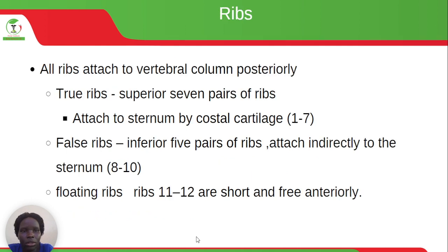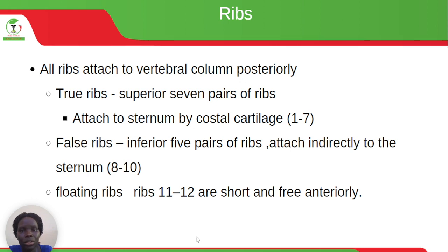All ribs attach to the vertebral column posteriorly. True ribs are the superior 7 pairs of ribs and they attach to the sternum by costal cartilage — ribs 1 to 7. False ribs are the inferior 5 pairs and they attach indirectly to the sternum — ribs 8 to 10. Floating ribs are ribs 11 to 12. They are short and have free ends anteriorly — they are not attached anywhere, whereas the others are attached to the sternum through cartilage.